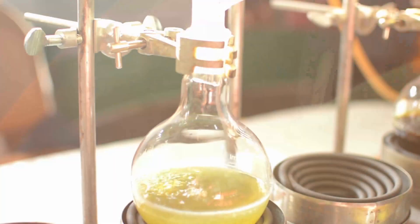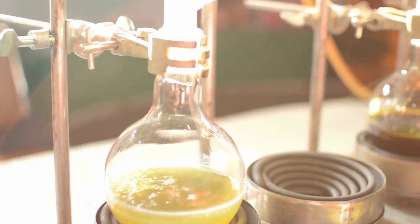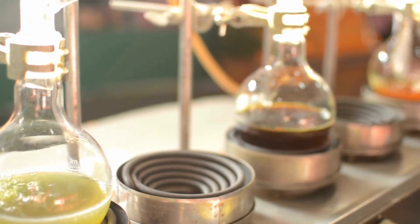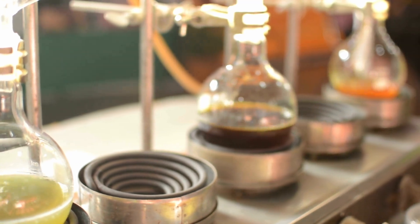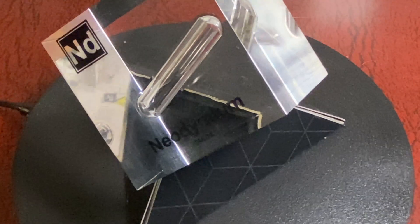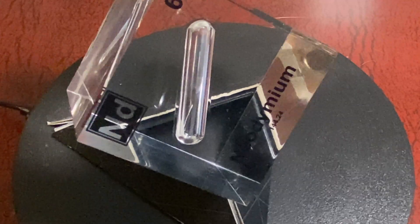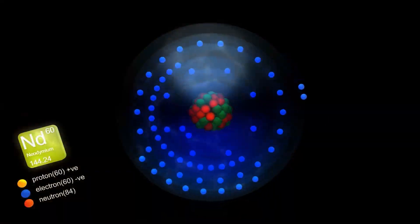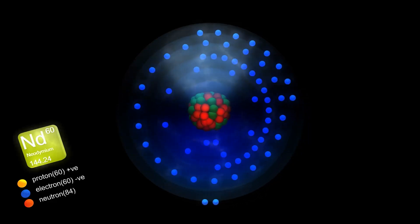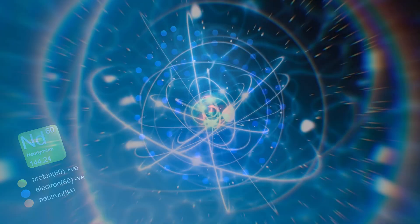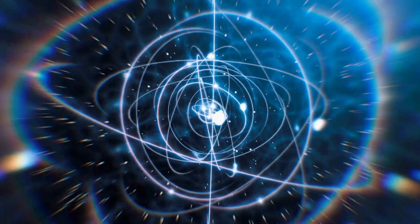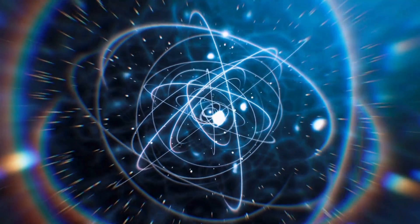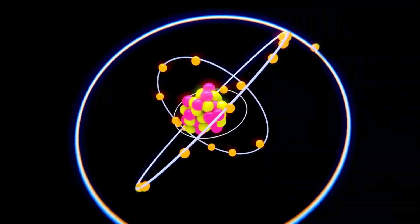Separating neodymium from its companions is no small feat. The extraction process is complex and resource intensive, often requiring the use of harsh chemicals, extensive refining and precise techniques to isolate them. One of the primary challenges is the similarity in chemical properties among lanthanides. Why is that? The additional electrons that lanthanides have compared to lanthanum are located in nearly circular paths, called the 4f orbitals. Because these paths are deep inside the atom, the electrons are mostly hidden by outer, more elliptical orbits.